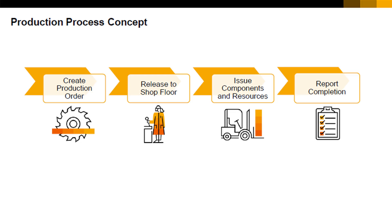When the production process is over, the production order is closed. This closure creates a journal entry for balancing inventory accounts at perpetual inventory managed companies.